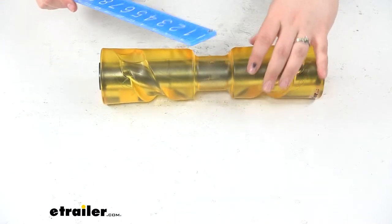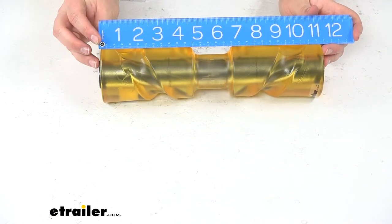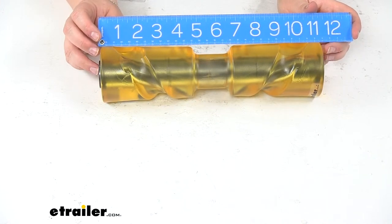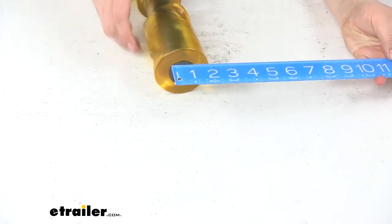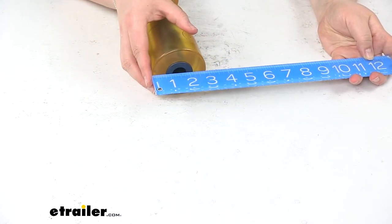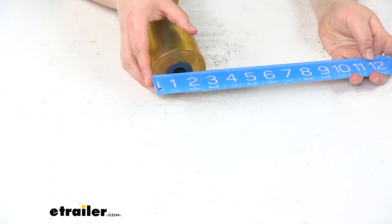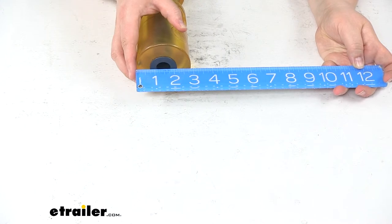The actual dimensions of our keel roller going from this little spacer to the other one, it's about 11 and 3 quarter inches long and then overall it's about 2 and 7 eighths inches wide or 2 and 7 eighths inches in diameter.